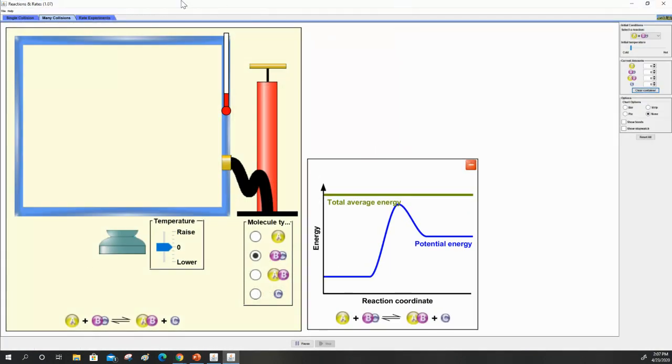All right, so I'm going to do another example of this reactions and rates. Up on the top left, I'm going to change the setting to many collisions. Over here I have my temperature settings, and I have the container cleared at zero amounts of anything. Over here I have my energy diagram.